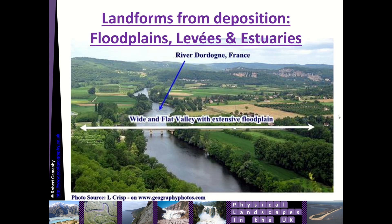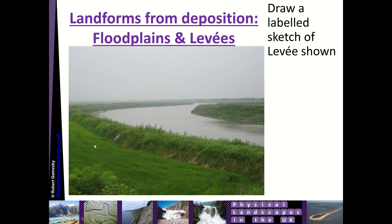Today we're looking at floodplains. This is the river Dordogne in France — you can see there are some steepish hills either side, but this flat area in the middle is brilliant farmland. You can see lots of farming taking place — these are fertile floodplains, really wide expansive land either side of the river. Here you can also see a levee — that ridge running along here is a natural embankment either side of the river.